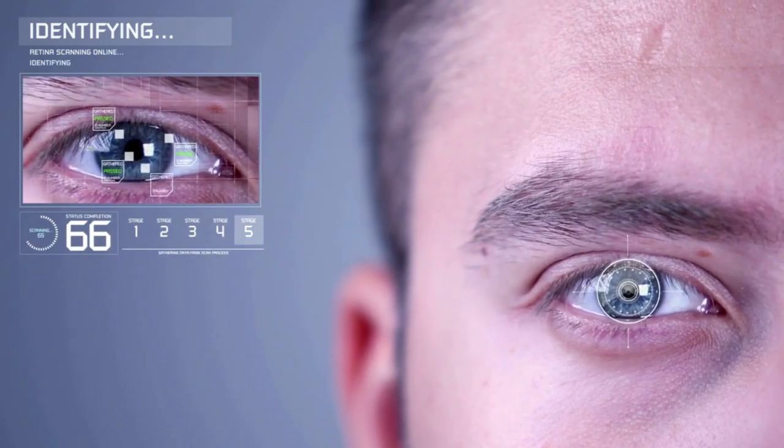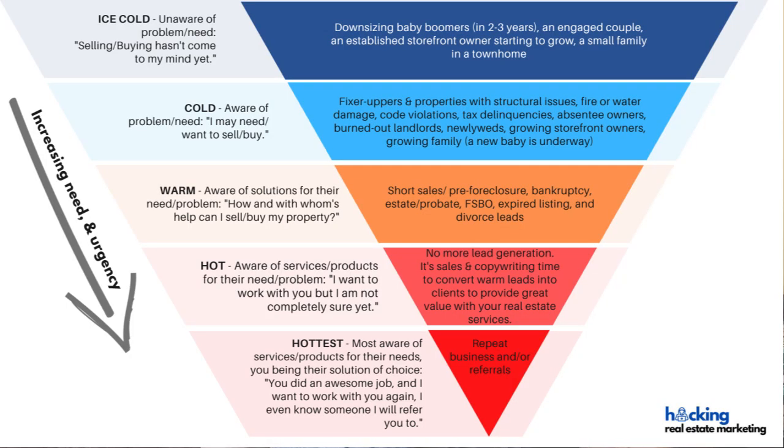When you qualify leads on the phone — you do that, right? — you're basically scanning them for their awareness levels. With qualification questions, you filter out the bad apples. You try to find out their level of need and time frame, and also whether they are the decision makers. If they are a buyer, do they have the money? You don't want to talk with somebody who can't even make the decision to sell their home or buy a property. By checking their needs, wants, and urgency, you can learn whether your generated real estate leads are ice-cold or warm.